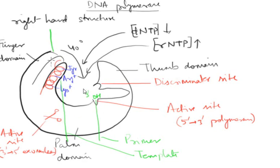The 3' OH required for polymerization is provided by an RNA primer. Why is the primer in the form of RNA? Although it is later removed and filled by DNA, the answer is that RNA-DNA interaction is comparatively stronger than DNA-DNA interaction. So if a DNA primer were used, there would be a chance that the DNA primer could be released due to the weak DNA-DNA interaction. That is why an RNA primer is first used for nucleation.